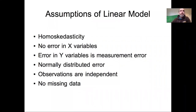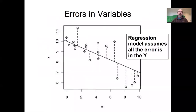In this video I wanted to continue discussing the assumptions of the linear model, and particularly want to focus on the second bullet point: that the classic linear model assumes that there is no error in the X variables. As this figure shows, traditional regression models assume that all of the error is in the Y direction. We calculate the difference between the expected value of Y from our model and our observed Y just as the difference in that Y direction.